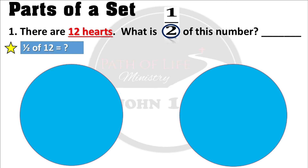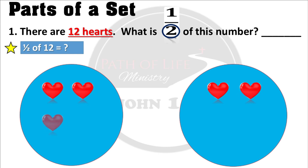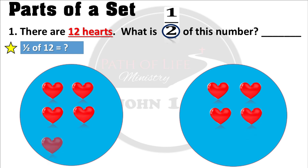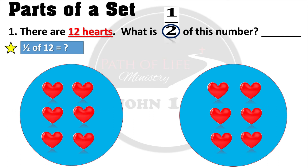We place the hearts into the groups equally. Follow closely: one, two, three, four, five, six, seven, eight, nine, ten, eleven, twelve. The 12 hearts are now shared equally into the two groups, and we can see that there is the same number of hearts in each group.